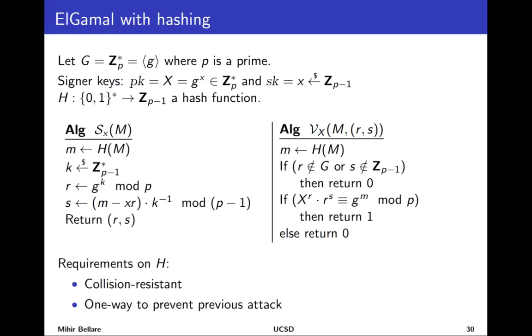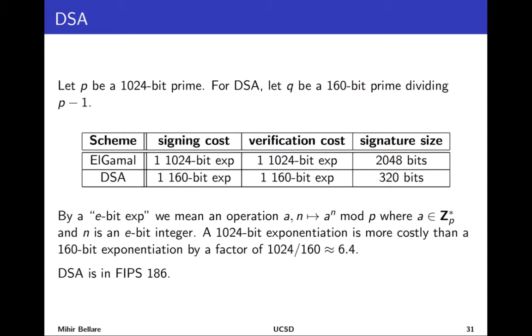Of course the requirement of collision resistance doesn't go away. So no matter what sort of signature scheme you have of this type that you're simply hashing the message and then doing some other kind of stuff you will need the collision resistance. So that requirement will be there and there's also some other not so well partially understood requirements to prevent prior attacks. But the practical understanding is if you use a good well-derived hash function of the types we mentioned before built from SHA-256 or 512 in a good way then this works.